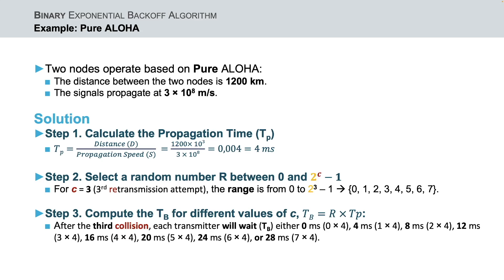Finally, if the second retransmission was not successful either, then the two transmitters will have to retry for the third time. The c variable will be equal to 3 and thus the new range will be from 0 to 7. Consequently, based on the outcome of the random variable r, after the third collision, each transmitter will wait for either 0, 4, 8 and so on, till 28ms.